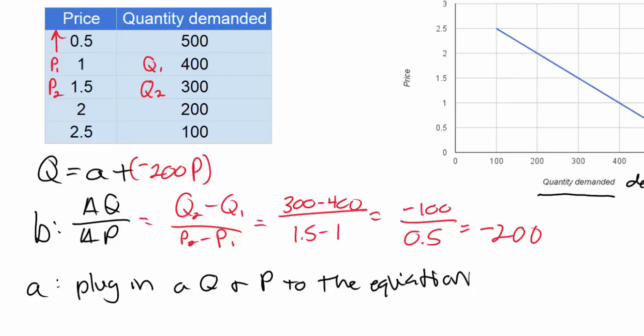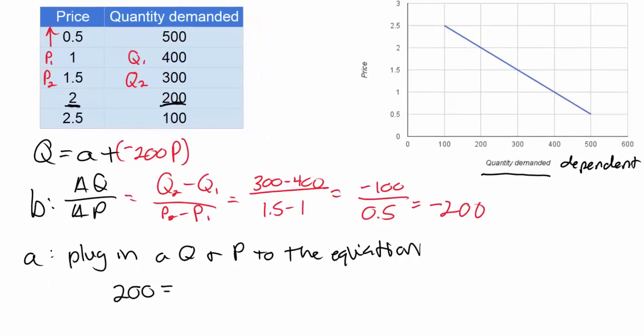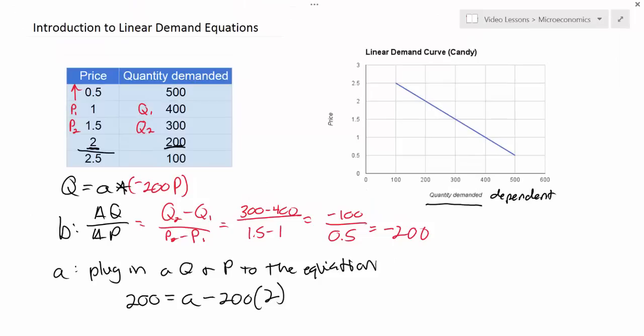So let's do that. Let's just choose this combination here. I'll choose a price of 2 and a quantity of 200. So I know that when the quantity is 200, I can say 200, that's Q, equals a, and I'm going to now just cancel out the plus sign here, and we'll say minus 200 times the price of 2. So I've just chosen this point on my demand schedule, which would represent this point on my demand curve.